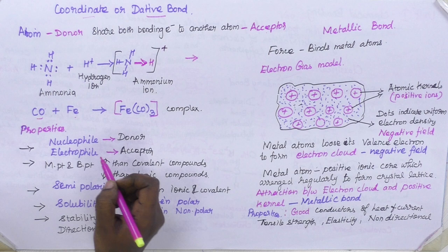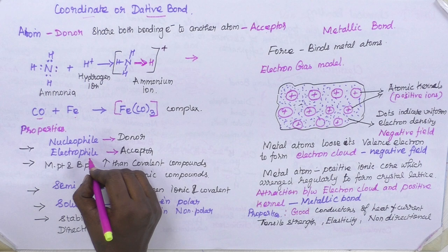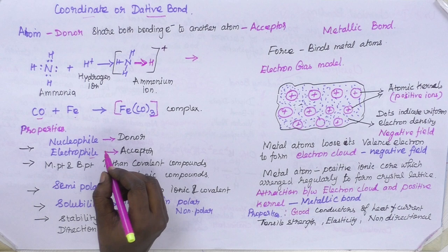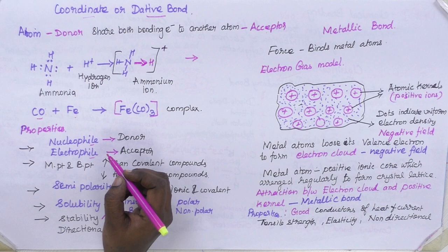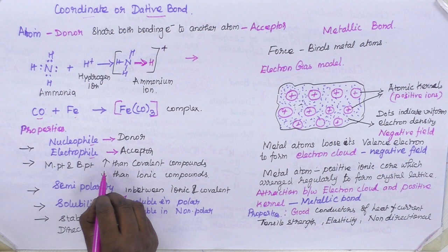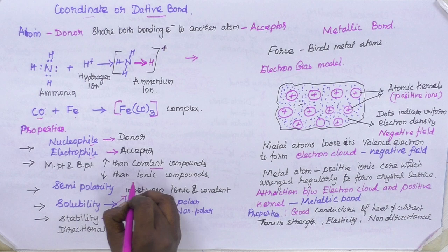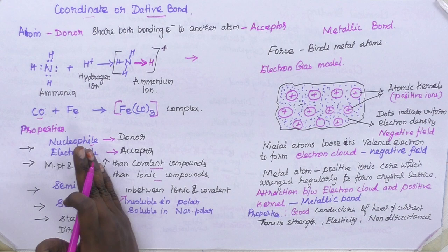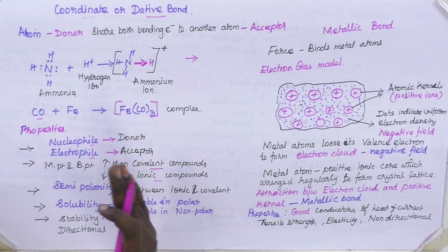Now we are going to see the properties of the coordination bond. The donor which can donate two electrons is called a nucleophile, and the acceptor which accepts the incoming two electrons is called an electrophile. Most metals are electrophiles which can accommodate two electrons, and the organic species which can donate two electrons is considered a nucleophile. Now comparing coordination complexes with ionic and covalent molecules: regarding melting point and boiling point, coordination complexes have higher melting and boiling points than covalent compounds but lower than ionic compounds, showing in-between properties.